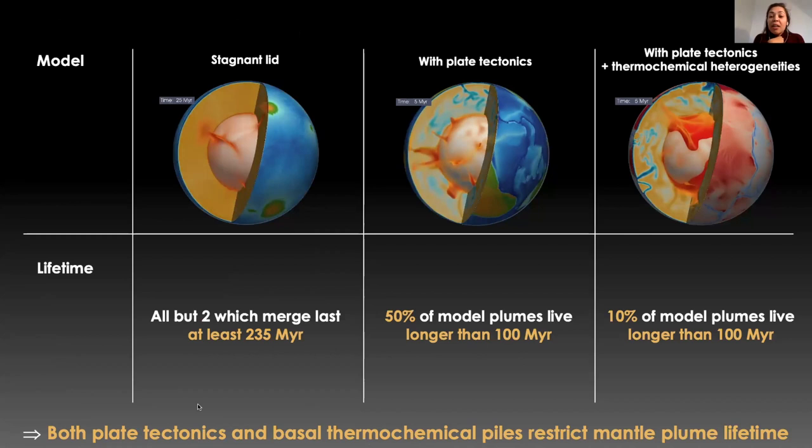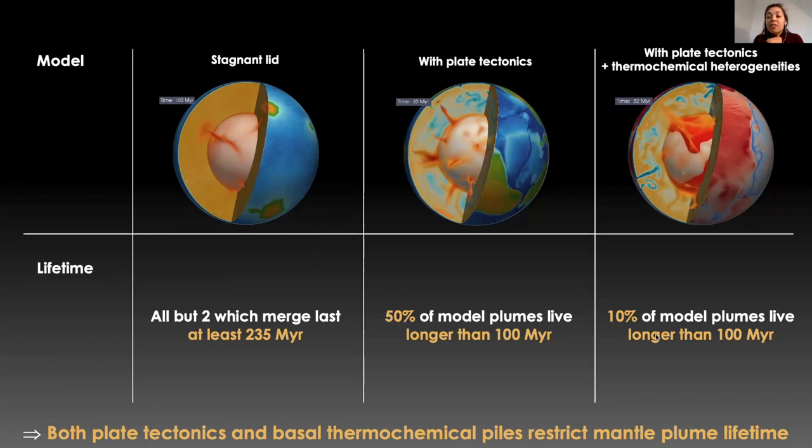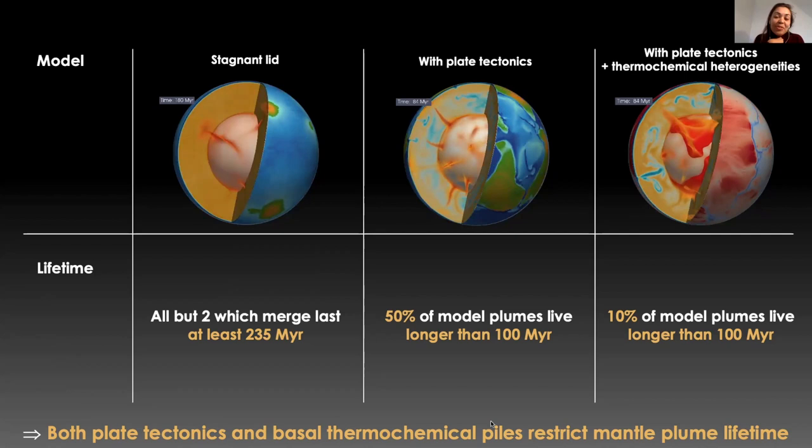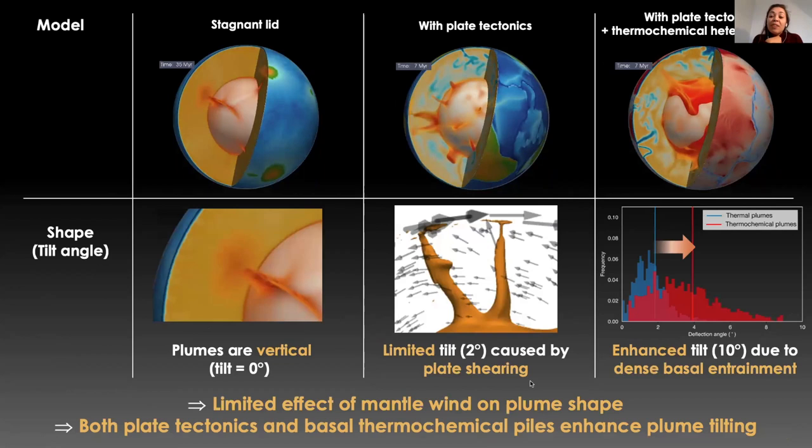By tracking plumes through time we found that both plate tectonics and basal thermochemical piles restrict plume lifetime, with only 10 to 50 percent of the plumes living longer than 100 million years in those models.